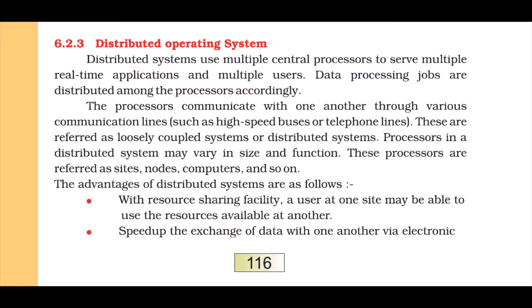Any computer that is able to communicate with another computer can serve as a distributed system. They can share real-time memory, share real-time processes, and support multiple user processors at the same time. These are referred to as loosely coupled systems or distributed systems. Processors in a distributed system may vary in size and function. These processors are referred to as sites, nodes, computers, and so on.